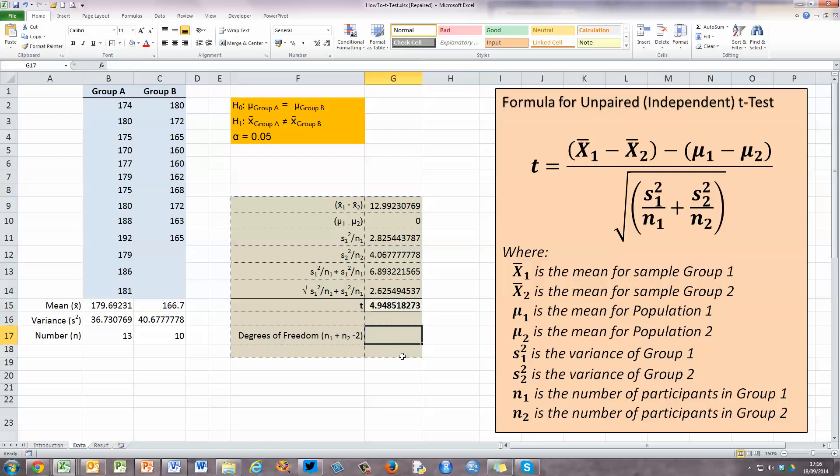So I'm just going to type in, I'm going to use formulas here, equals n₁, that's the value in cell B17, plus n₂, which is the value in cell C17, minus the number 2. Press enter. So we've got 21 degrees of freedom and a t value of 4.9485.